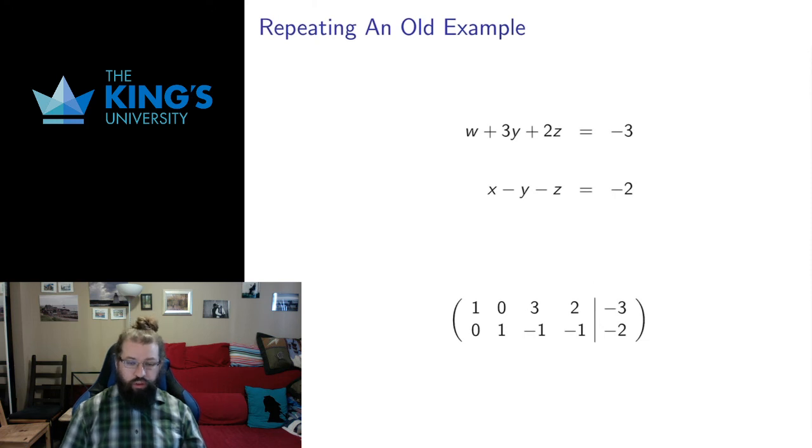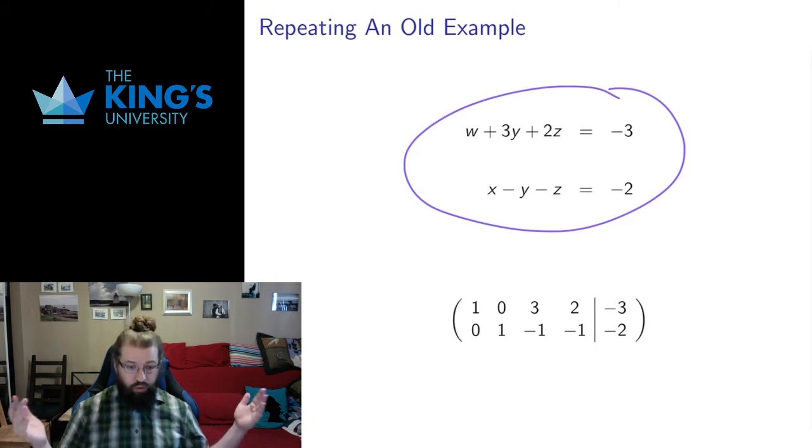Let me return to an example we did last week to make this clear. Here are two linear equations in R4. That gives us a locus in R4. We expect this to be a plane because we have R4 with two restrictions, so four minus two should be dimension two. Ideally this would be a plane, but maybe one of the equations is redundant. We put the equations into a matrix.